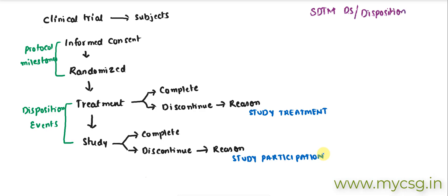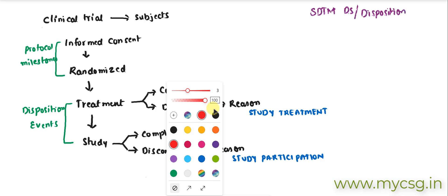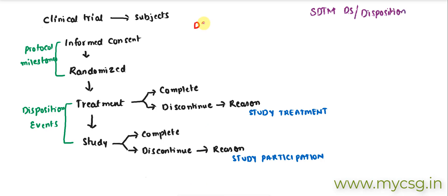What we basically capture in disposition is the important dates for all of these things — the date when the subject signed the informed consent, the date when the subject was randomized, and the date when the subject chose to complete or discontinue the treatment or study. The key variable used to store this date is DSSTDTC, which is the disposition start date/time in ISO 8601 notation.